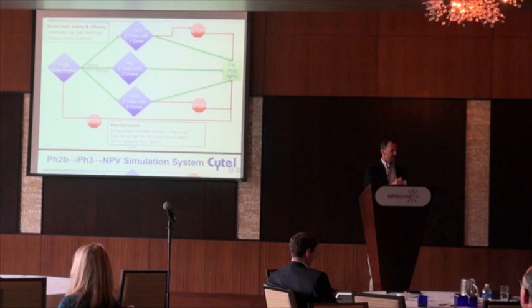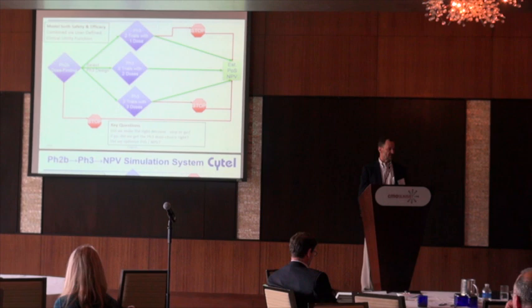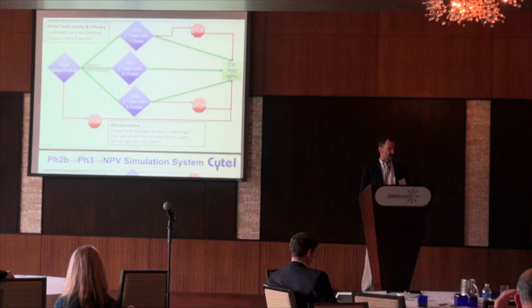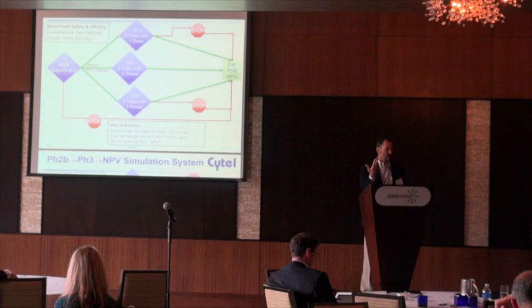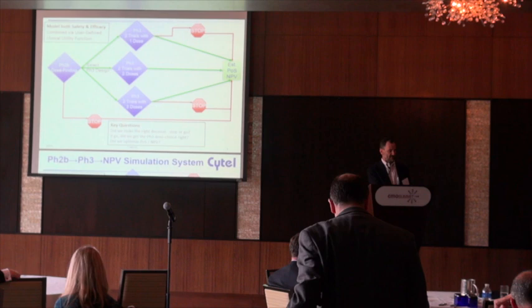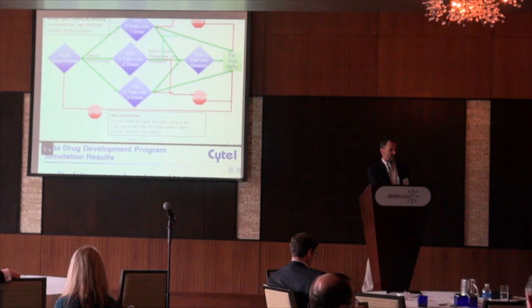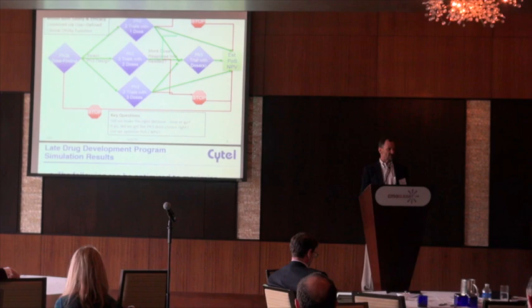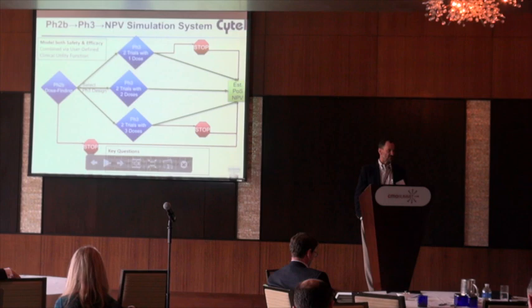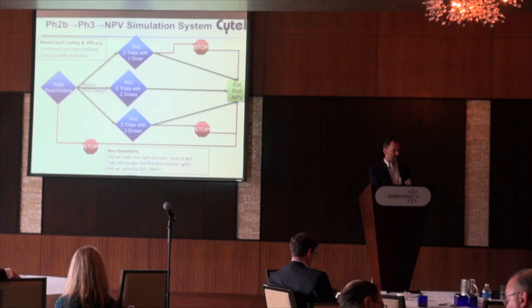This is a schematic of the simulation of the late-phase project starting with phase two, which launched into phase three trials with one, two, or three doses. There were decision stopping criteria after each stage and go criteria toward filing. The evaluation was based on whether we made the right decision to stop or go, whether we got the phase three dose choice right, and whether we optimized probability of success and net present value. Future work involves adding an additional phase three trial after initial results in case sufficient dose finding information was lacking.